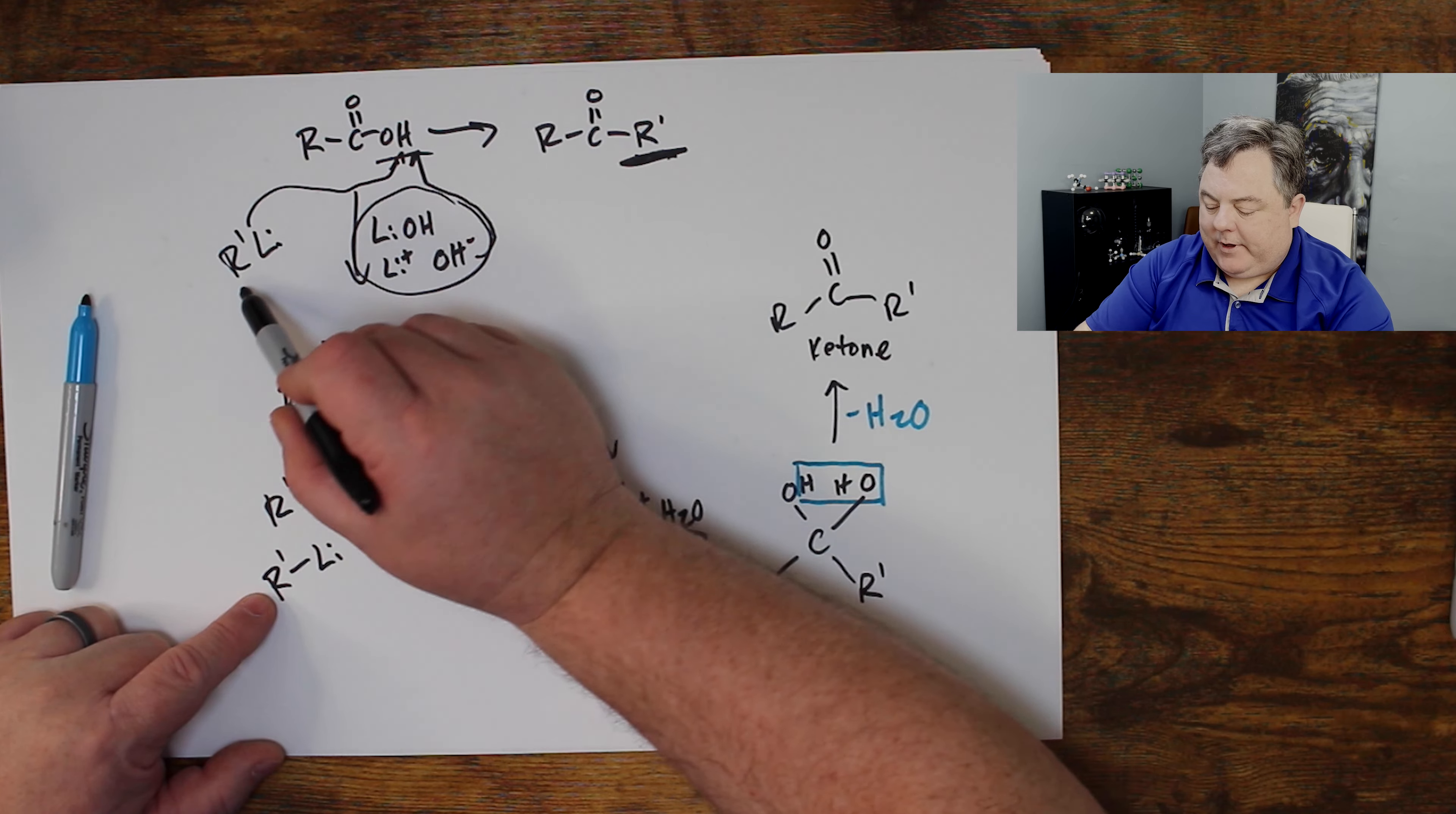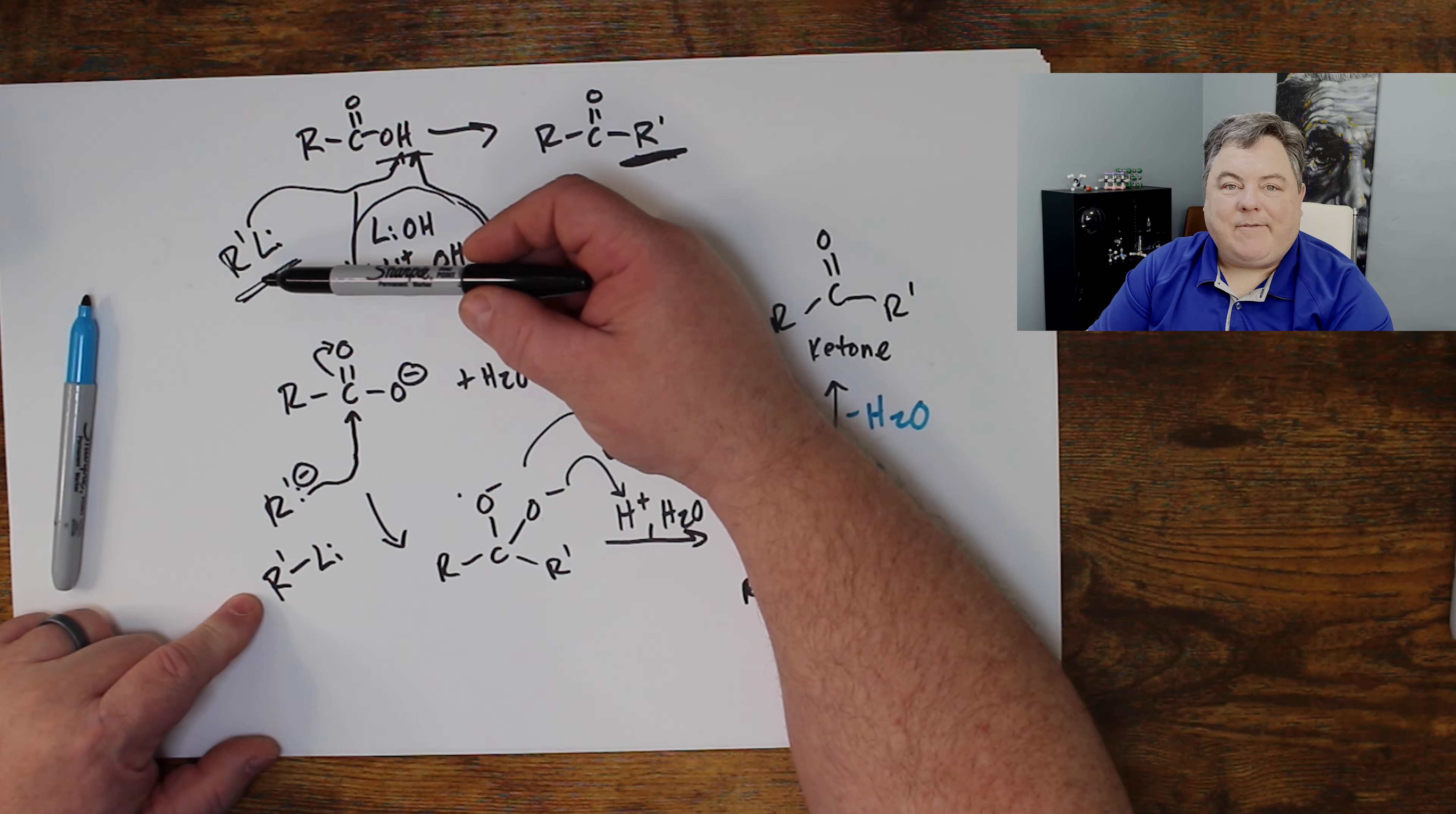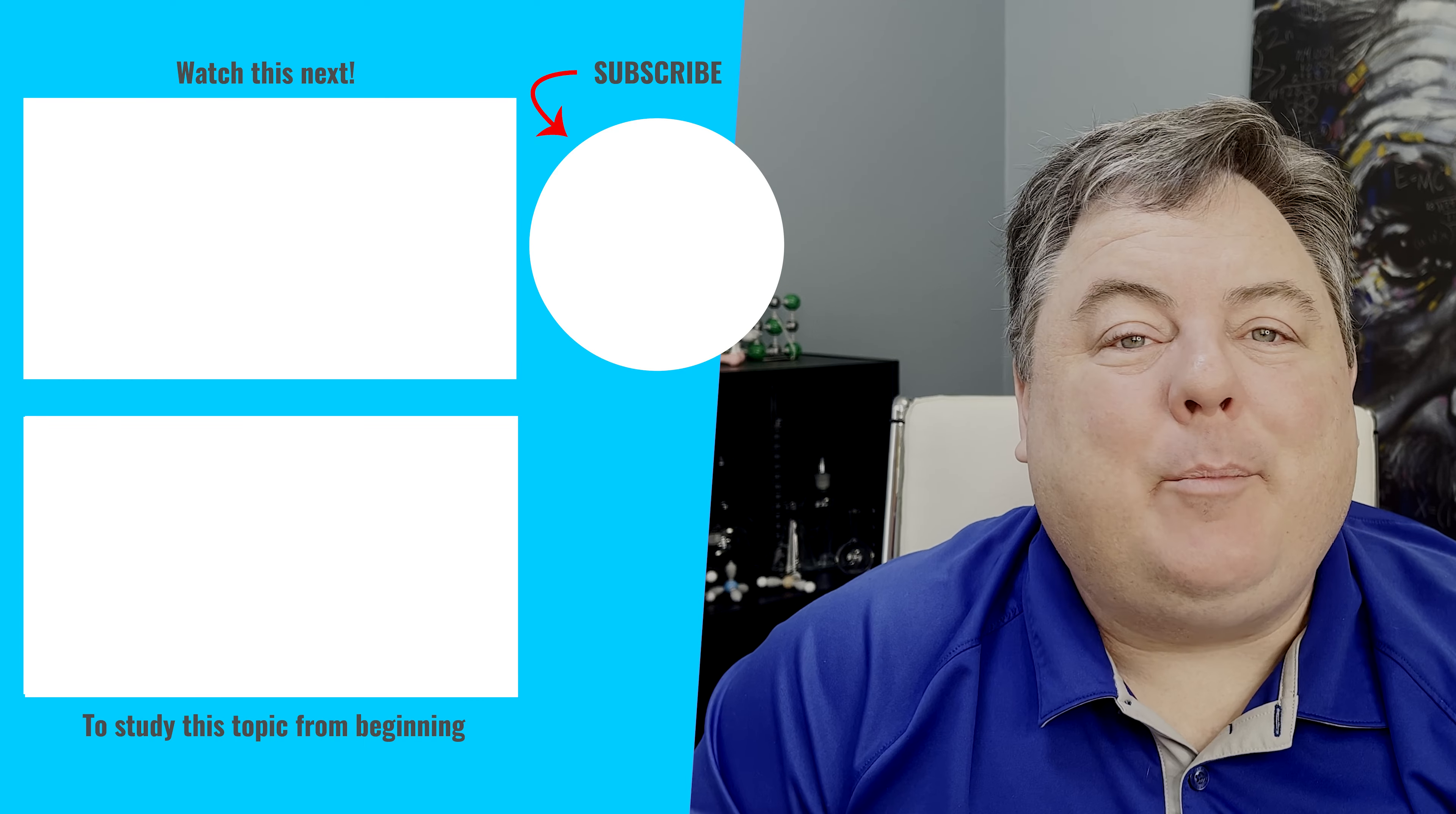The first one would just have pulled off the proton and the second one does the important attack. So if this was really cheap and you had a bunch of it, you can just double the amount of that and do it all in one step. But if this is expensive or you spent six months trying to make it, maybe you don't want to burn half of it in the reaction just as a base. So you can just use lithium hydroxide for this first step.